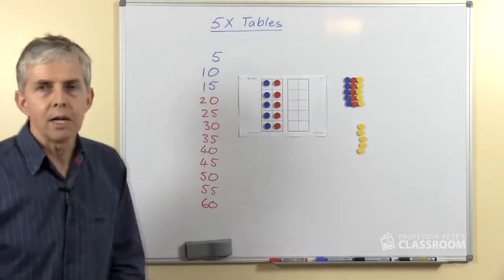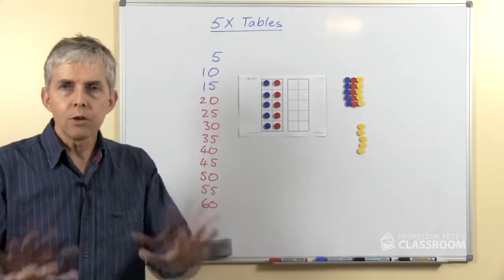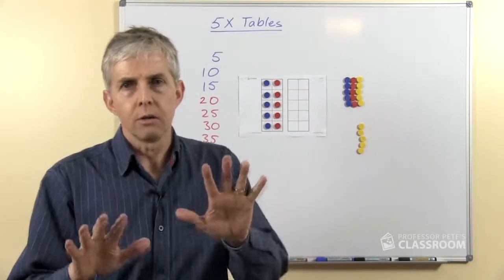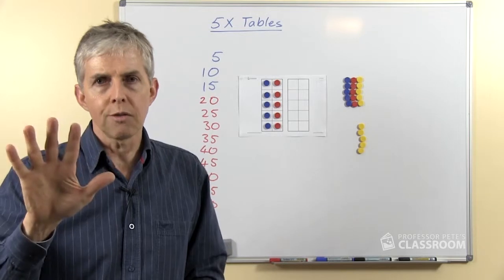So what I want you to think about is, why does it keep going 5 and then 0 and 5 and then 0? Well if you look at your hands you may get a clue. If you look at the digits, the thumb and the fingers on one hand, of course there are 5 of them.